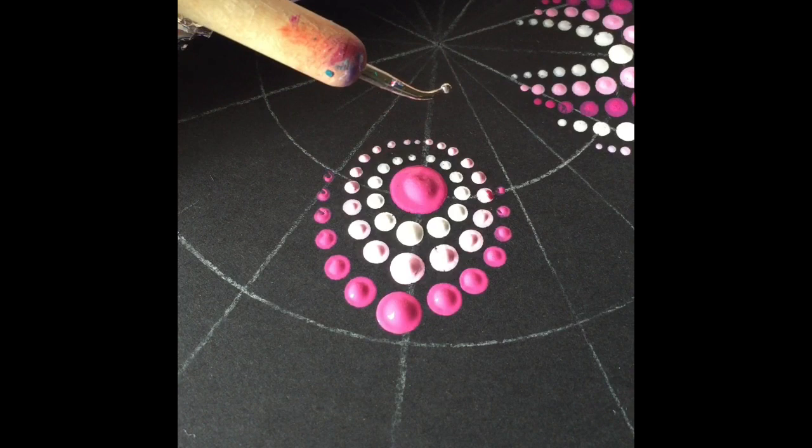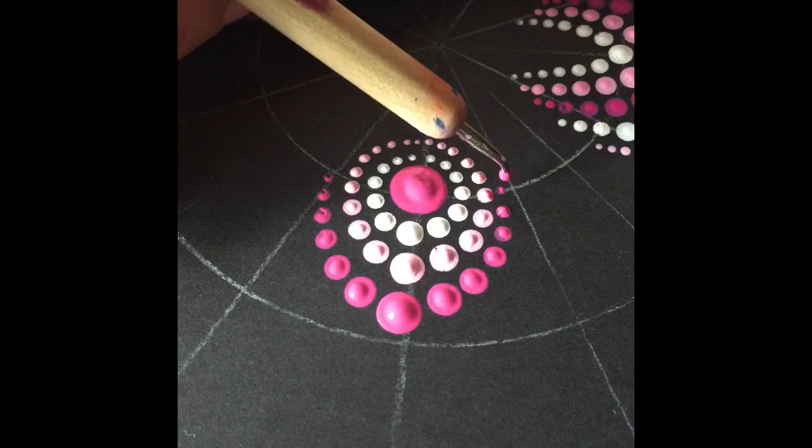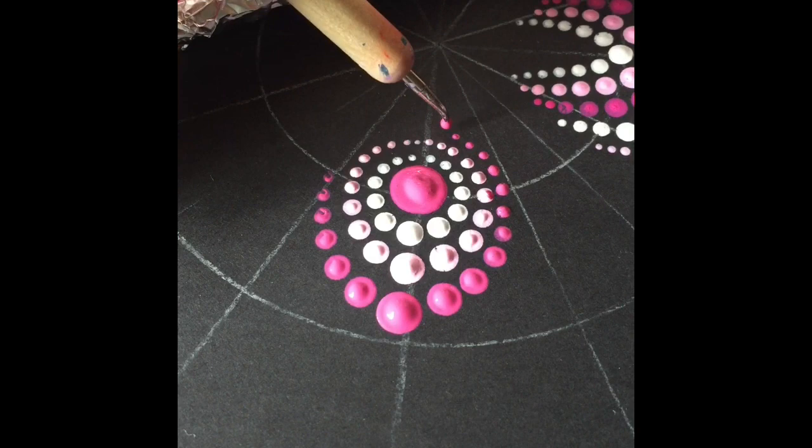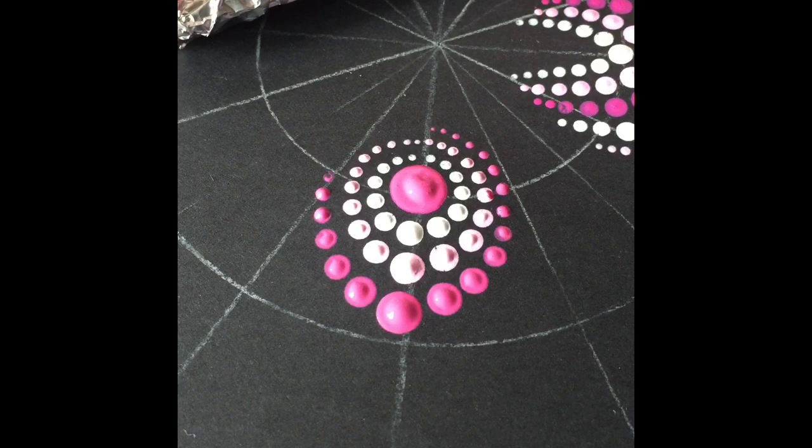So now I'm getting the second smallest tool that I have and I'm just going to fix up the last couple of dots that I do there. Make them a little bit bigger even. Go over them a couple times and then make those last few really small.